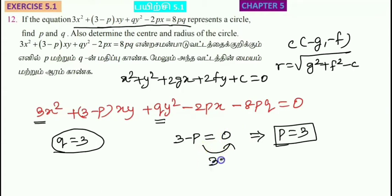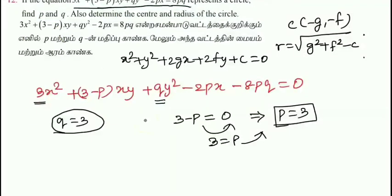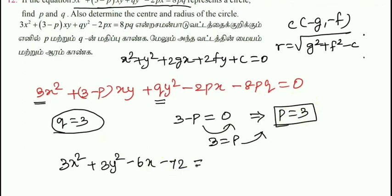Since P equals 3, and P equals Q, we substitute into the equation: 3x squared plus (3-3)xy plus 3y squared minus 2 times 3 times x, which gives 6x, minus 8 times 3 times 3, which gives 72, equals 0.